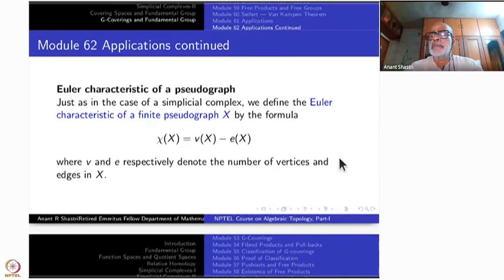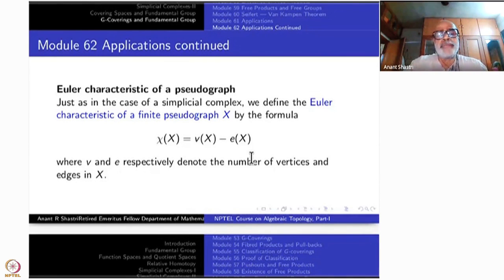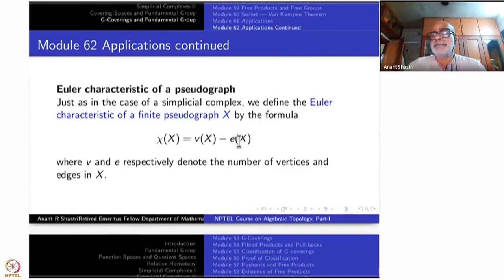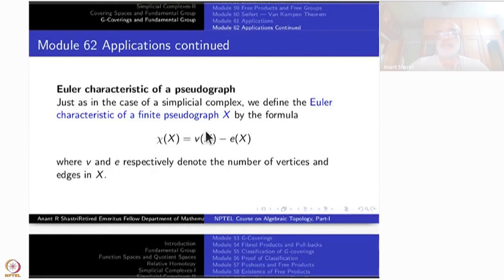The same definition applies to a pseudograph: the number of vertices is denoted by V(X) and number of edges by E(X). There are no higher cells in a pseudograph, so the Euler characteristic is defined as V(X) minus E(X). This coincides with the standard definition when the pseudograph happens to be a one-dimensional simplicial complex.